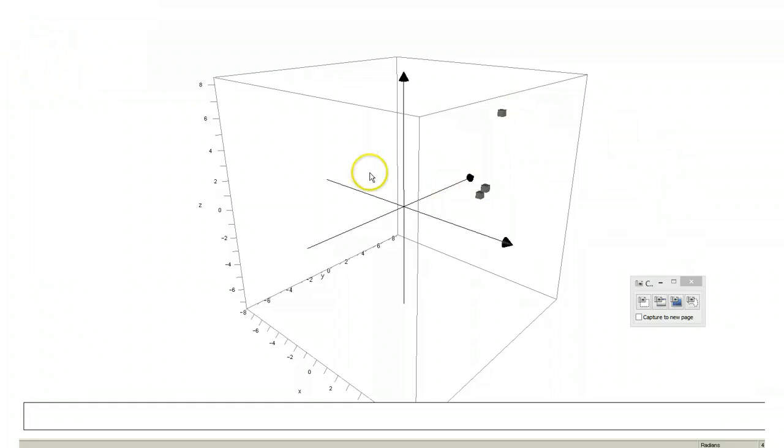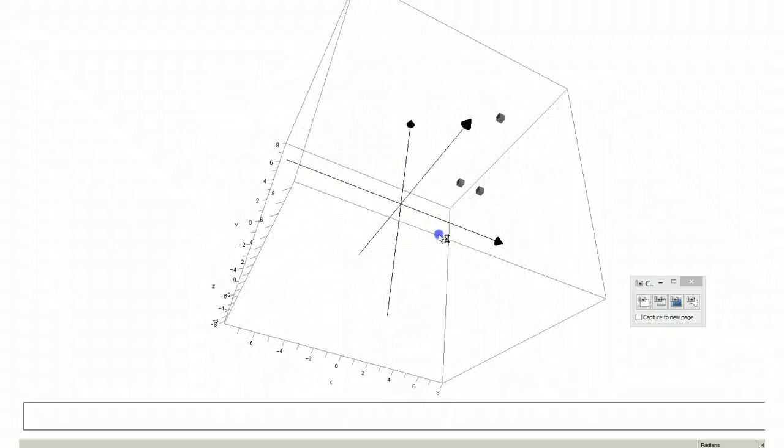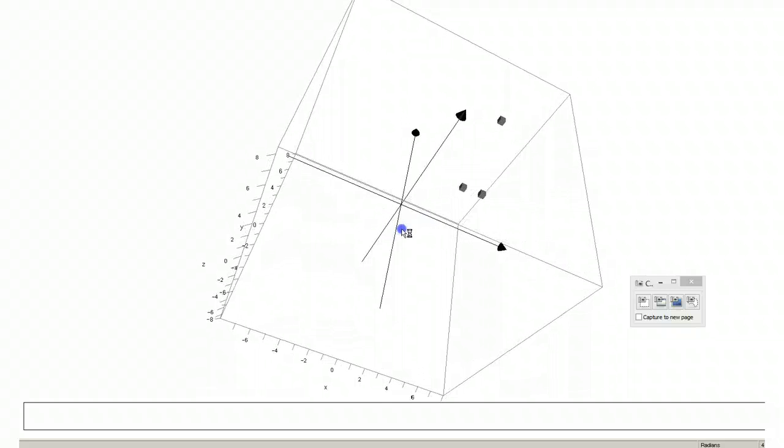So what we're going to be looking for is a plane that passes through all three of those points. We're going to come back to this a little bit later on and we're going to check our answer when we find it.